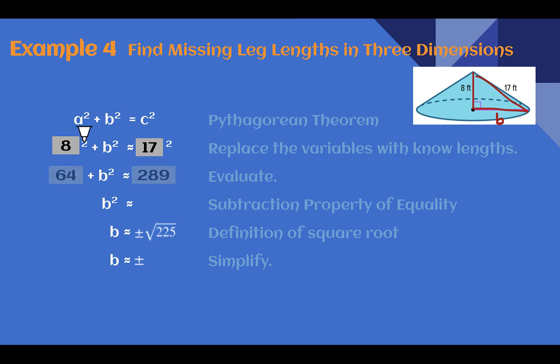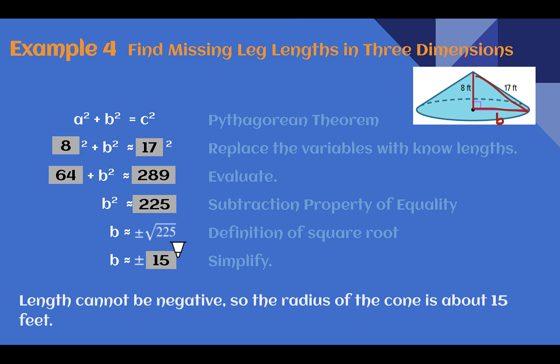Let's square them out. A squared is 64, 17 squared is 289. Subtract 64 from both sides, so b squared is around 225. Take the square root of 225, b is about 15. And again, length can't be negative, so it is about 15 feet.